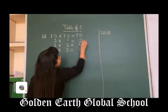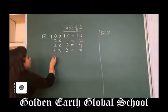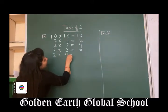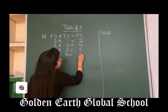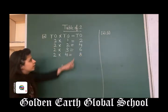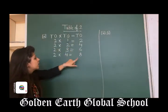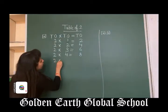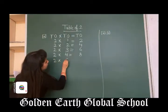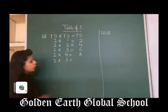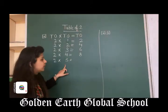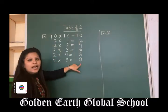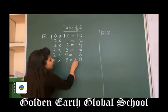Write down 6 under 1s. 2, 4s are 8. Write down 8 under 1s. What comes after 4? 5. 2, 5s are 10. Write down 0 under 1s and 1 under 10s.